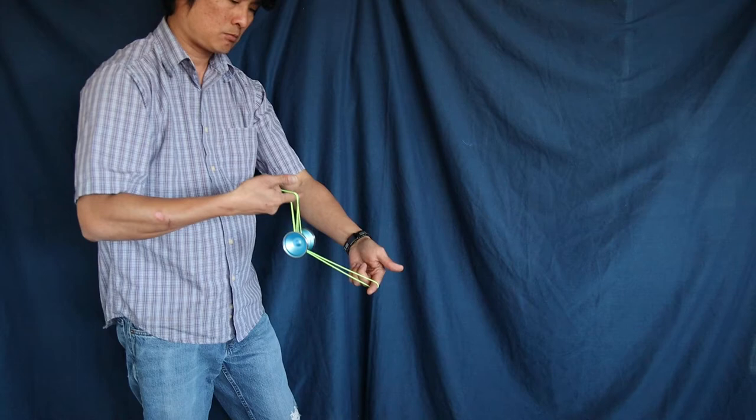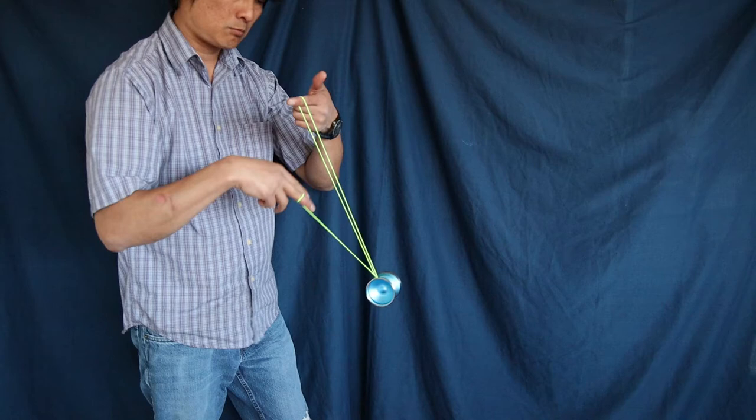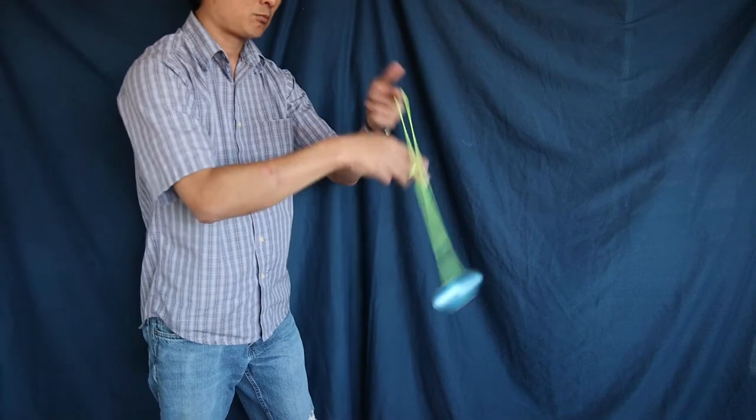So your yo-yo is actually landing on around three to four strings here. And then once you land it, you pop it off back towards you. And then you're going to do a kind of a reverse brain twister.